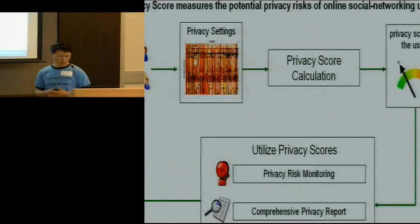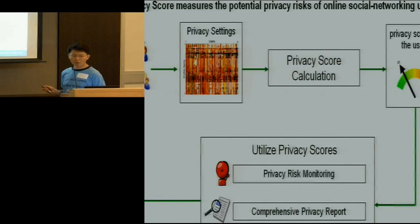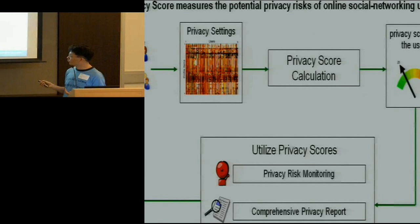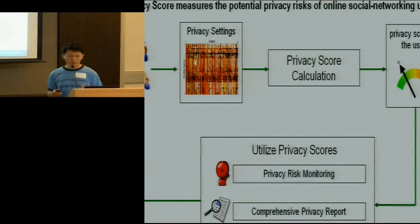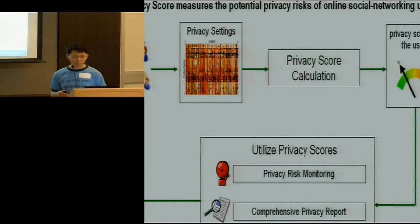Here is a very high-level lifecycle of the privacy score. The system takes the social network as input, extracts the privacy settings and profiles of all users, and calculates the score. This score is then visualized like a speedometer or gauge to the user, so they can monitor their privacy risk score and take a more active role in safeguarding their information. Information sharing reports and privacy setting recommendation applications can be developed based on this score.